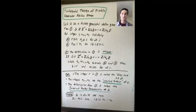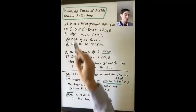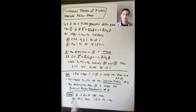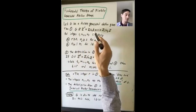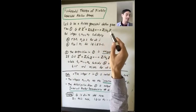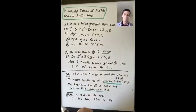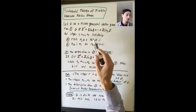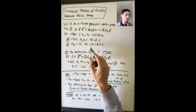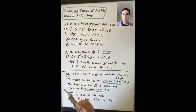Let's state the fundamental theorem of finitely generated abelian groups. Let G be a finitely generated abelian group. The first part of the theorem says that you can write G as a direct product: Z^R cross Z mod N1Z cross Z mod N2Z cross ... cross Z mod NSZ, where R and N1 through NS are integers satisfying R ≥ 0, each N_j ≥ 2, and N_{i+1} divides N_i for all i between 1 and S−1.